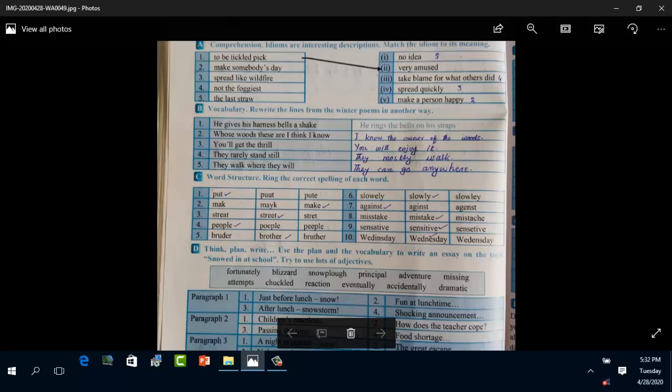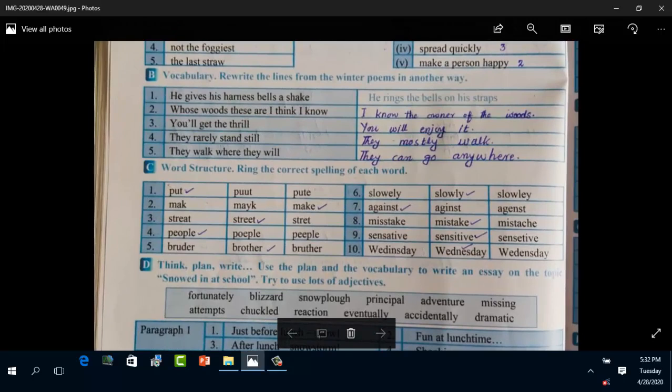Now coming towards the next page, that is page number 40, it's about word study, comprehension. Idioms are interesting expressions. Match the idiom to its meaning. To be tickled pink means very amused. Make somebody's day means make a person happy. Spread like wildfire - spread quickly. Take the rap - take blame for what others did. The last straw means no tolerance. Question number B is vocabulary: rewrite the lines from the winter poems in another way. He gives his harness bells a shake - he rings the bells on his straps. Whose woods these are I think I know - I know the owner of the woods. You will get the thrill - you will enjoy it. They really stand still - they mostly walk. They walk where they will - they can go everywhere.